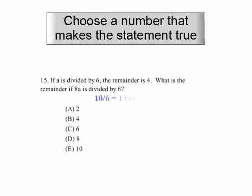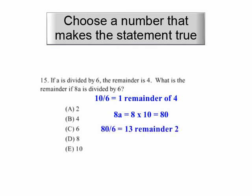For instance, 10. 10 divided by 6: 6 goes one time and leaves a remainder of 4. Now, multiply 10 times 8, giving you 8a, that'd give you 80. If I divide 80 by 6, 6 goes 13 times and leaves a remainder of 2 — a real number that's left over.